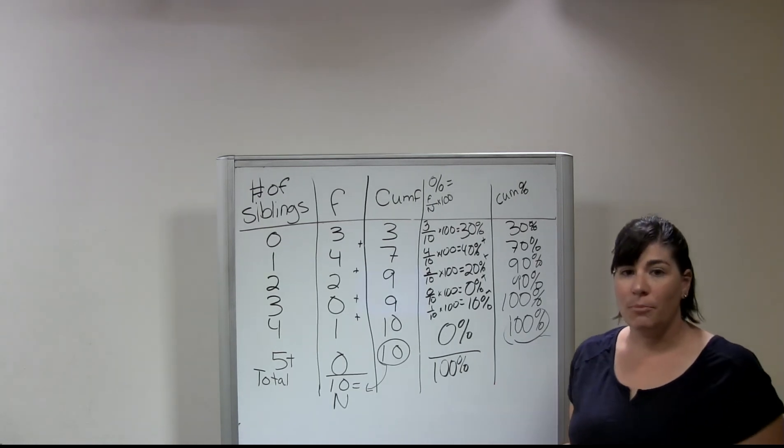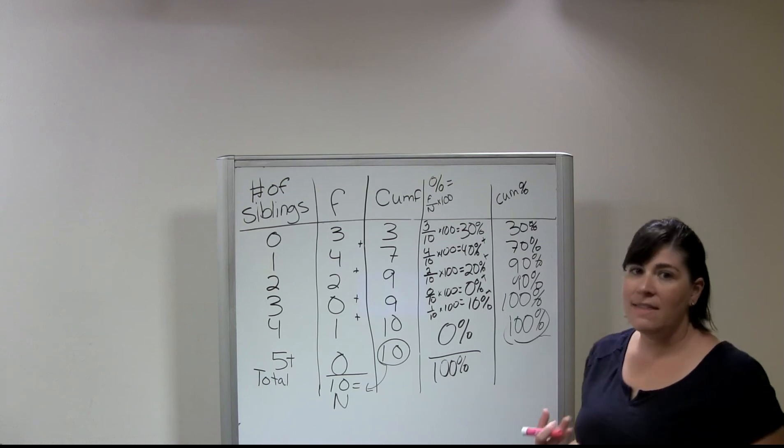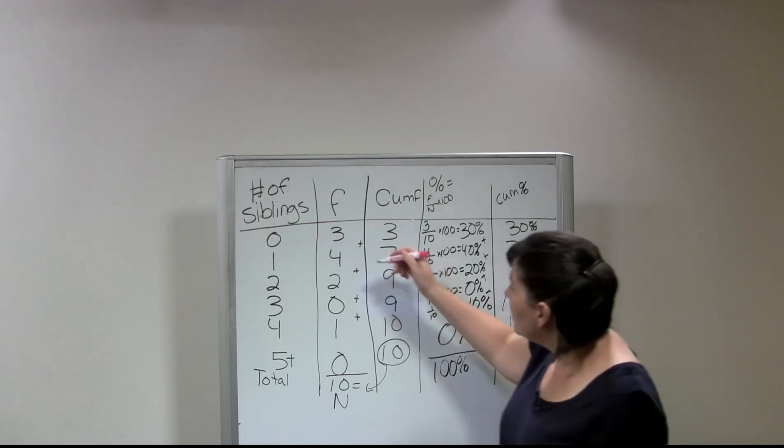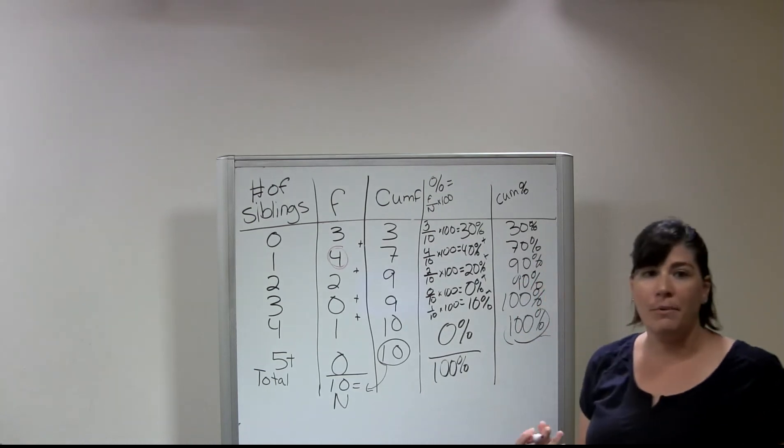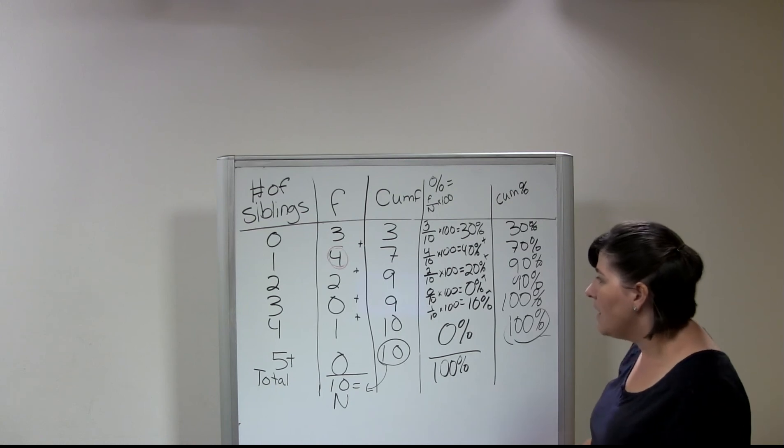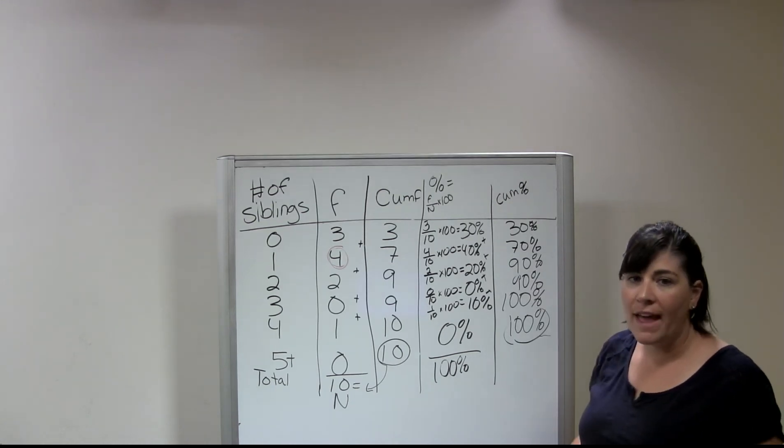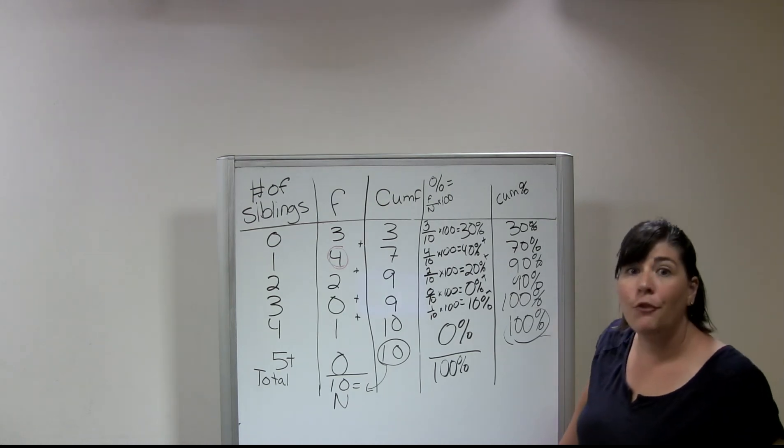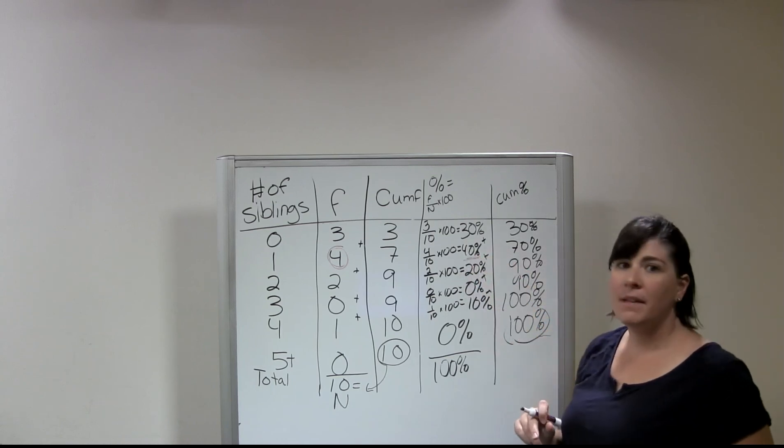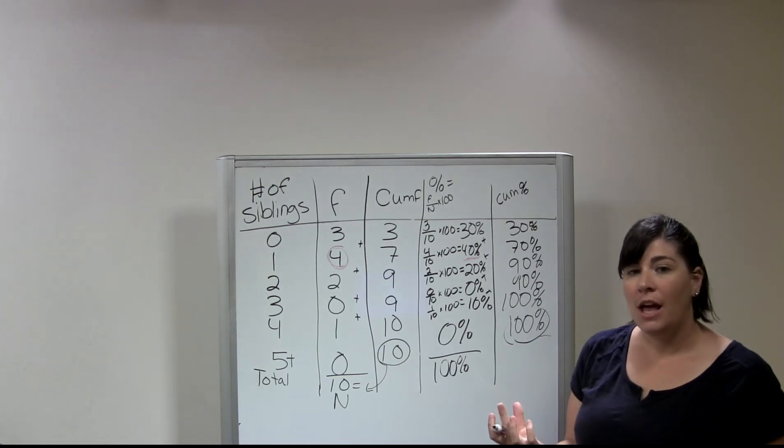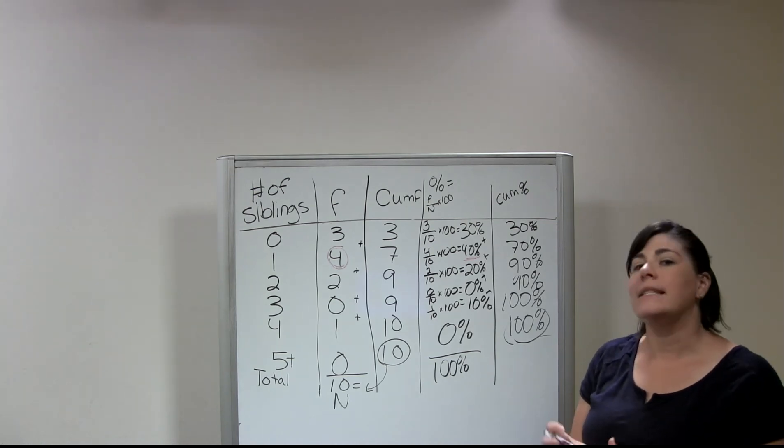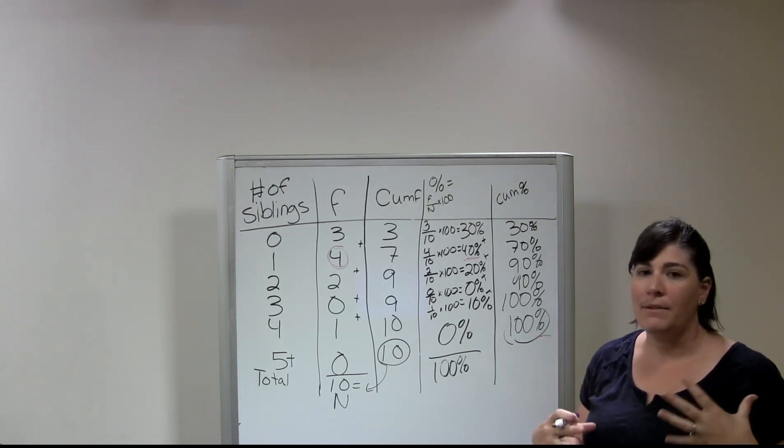So there are a couple of different ways that I can interpret this. One of the things I'm going to want to look for is I'm going to want to look for anything that stands out out of the ordinary. So I might want to talk about what has the highest frequency. So maybe I'm going to kind of zero in on this four people who have one sibling. And maybe I'm going to say something about the most common response that was given in this survey was one sibling. And four people gave that response. I can also do the same thing with the percentage. I can say something about how the highest percentage of responses was in the category of one sibling.